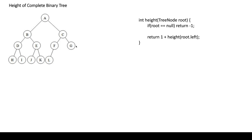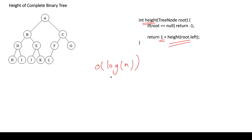The next property concerns the height of a complete binary tree. Normally we call recursion for both left and right subtrees and take the maximum. But in a complete binary tree, nodes lean to the left — the last row's nodes are on the left-hand side. So the height of the left subtree is always greater than or equal to the height of the right subtree. Therefore, we only need to call height on the left subtree and add one. This means height runs in O(log n) time.